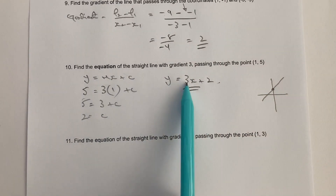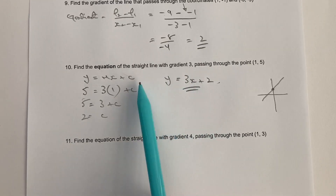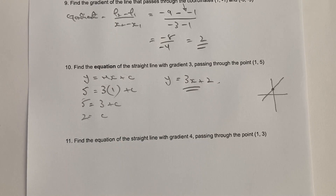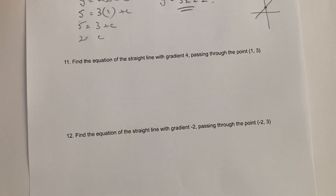So three is the gradient that we're told, and two is the value of c that we've just worked out. Have a go at question number 11 — it's pretty much the same, where we're going to be working out the constant.